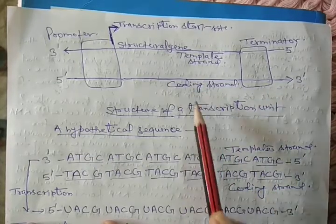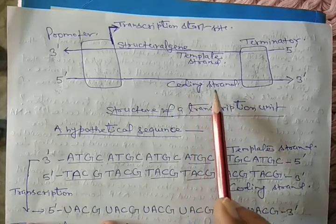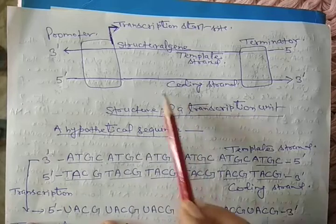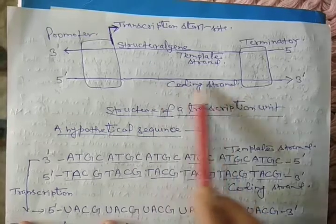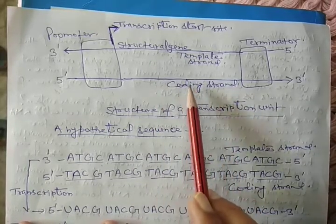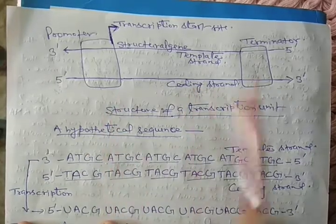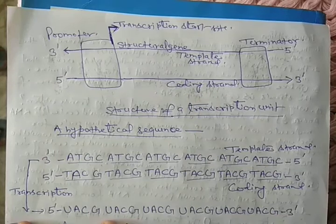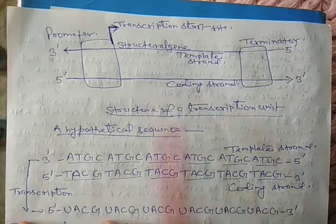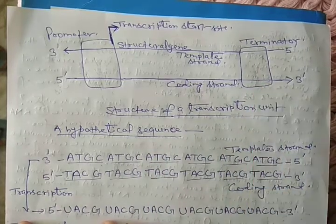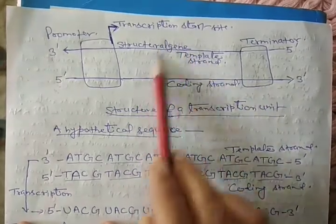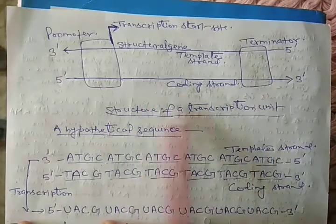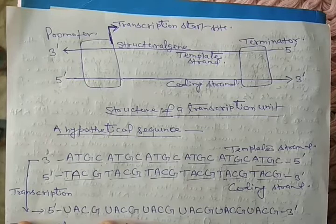Conventionally, the coding strand is used to give the reference for the location of the promoter and terminator in a transcription unit, even though the coding strand does not code for protein and does not take part in transcription — it is displaced during transcription. The promoter is located at the 5' end of the coding strand, the terminator at the 3' end, and between them lies the structural gene. This is the transcription unit that defines the boundary of the segment of DNA to be transcribed.